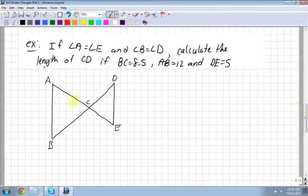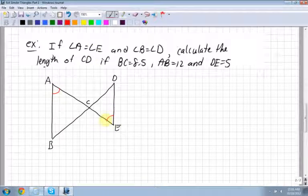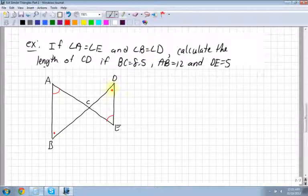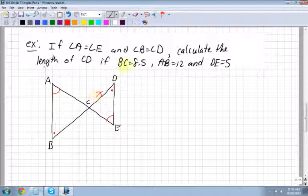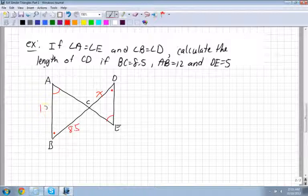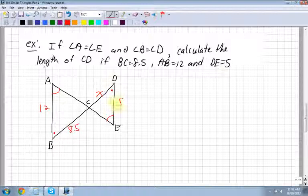Last example here. Now I have this weird-looking diagram. If angle A, which is up here, is equal to angle E, which is down there, and angle B, which is over here, is equal to angle D, which is over here, it says calculate the length of CD, C to D. So that's that length there. We'll call that X. It says BC is equal to 8.5. So B to C, that's on this big one, is 8.5. AB is 12. That's again on my big triangle, which is 12. And DE, which is this one on the little triangle, is 5.